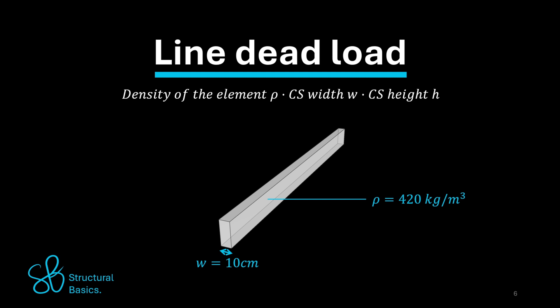and a cross-section height of 20 centimeters is calculated as 420 kg per cubic meter times 0.1 meter times 0.2 meter. And that equals 8.4 kg per meter.